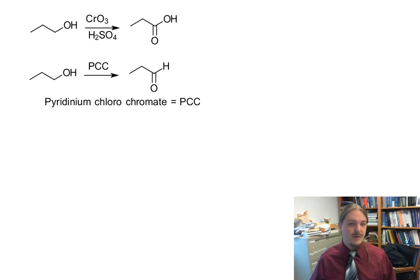Pyridinium chlorochromate is made in situ, so it's generated in the reaction by the reaction of pyridine as a base, hydrochloric acid or hydrogen chloride, and chromium trioxide.